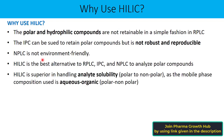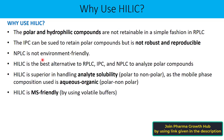HILIC is superior in handling analyte solubility. Polar analytes may not dissolve well in normal phase liquid chromatography because it uses a less polar mobile phase — a highly polar compound may precipitate out. There is no such risk in HILIC since it uses a polar component like water in its mobile phase, so polar compounds can be very well solubilized. HILIC is also mass spectrometry friendly — using volatile buffers like formic acid, it can easily be used with MS detection.